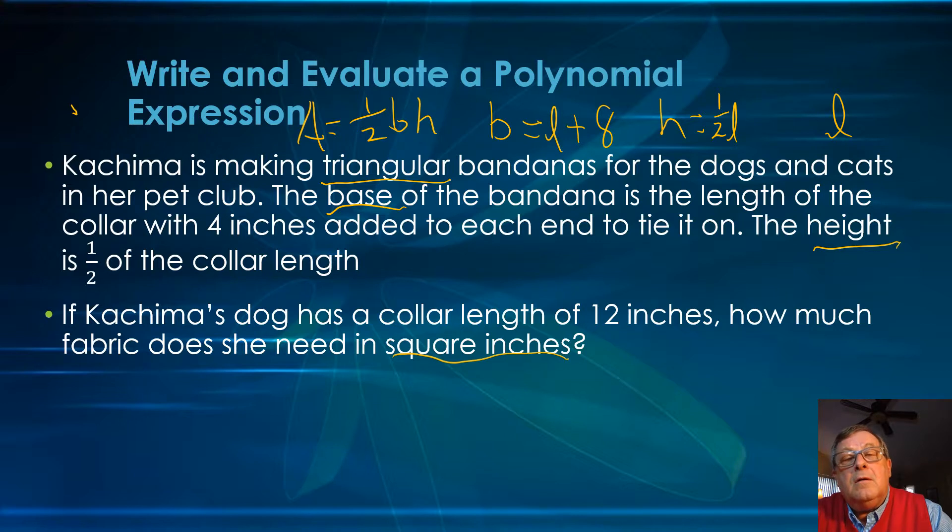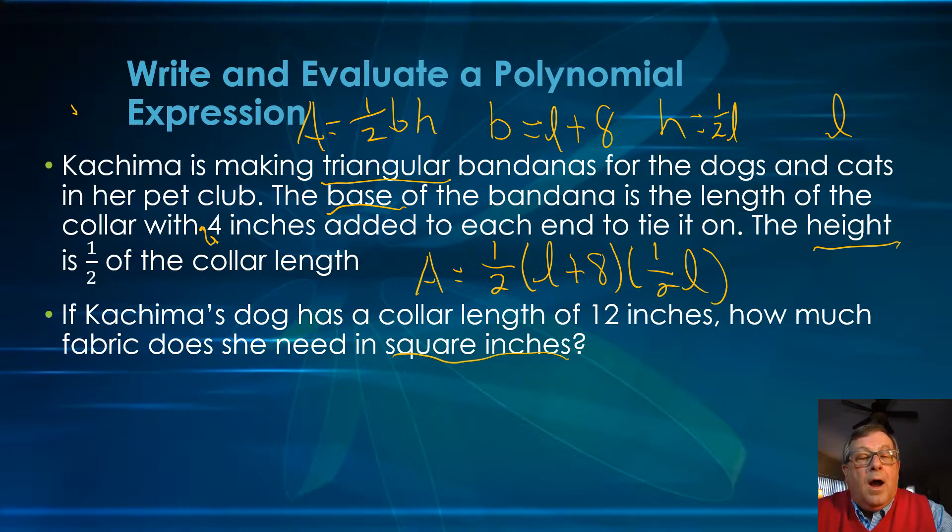I've got enough information here now to write my polynomial expression. The area is equal to one half times the length of the collar plus 8 inches times one half the length of the collar. One half the base times the height.